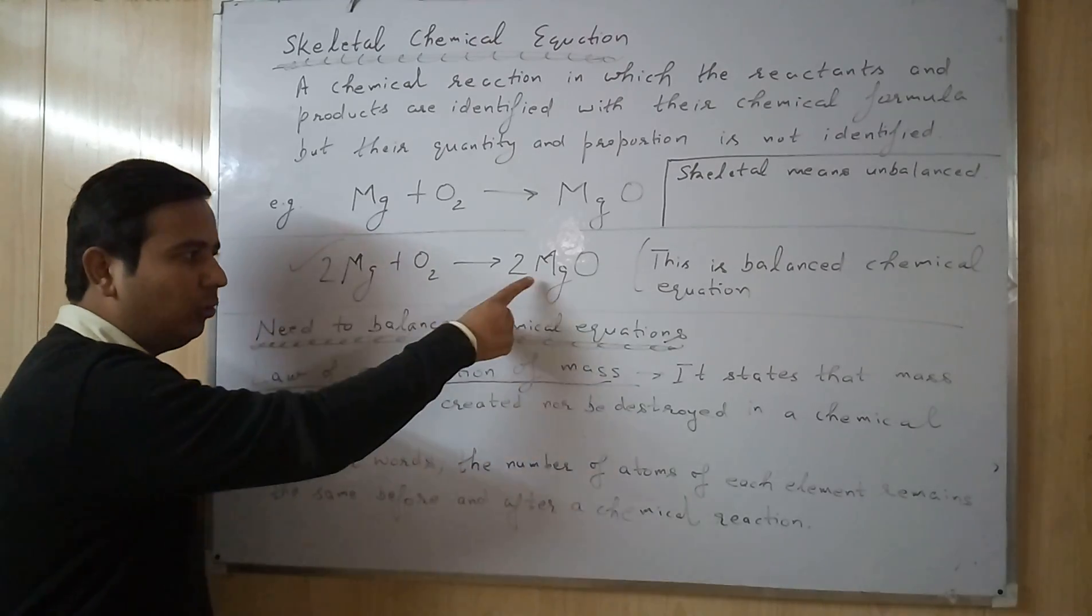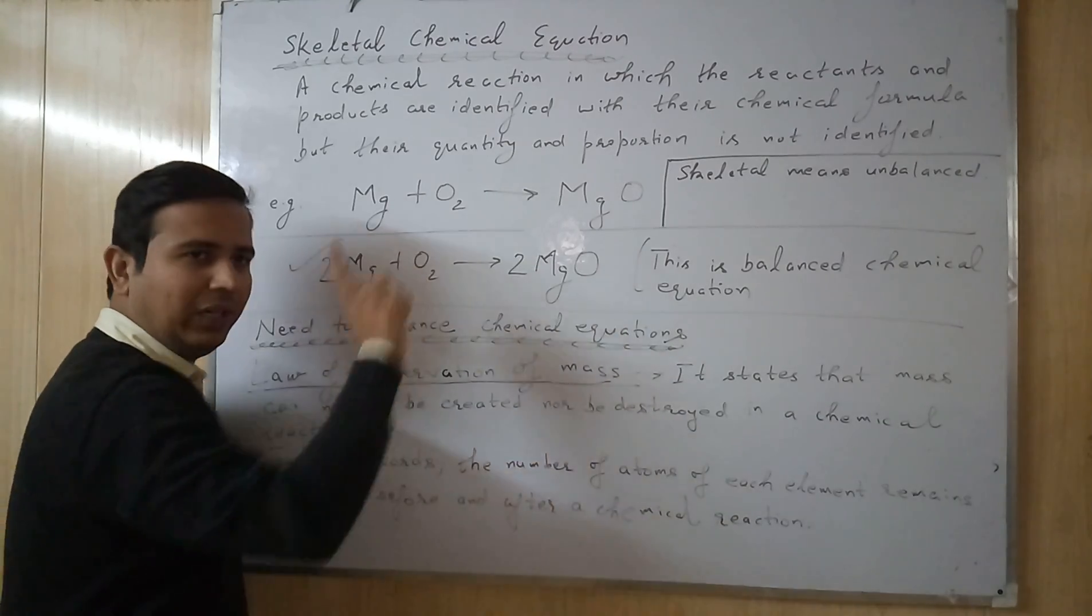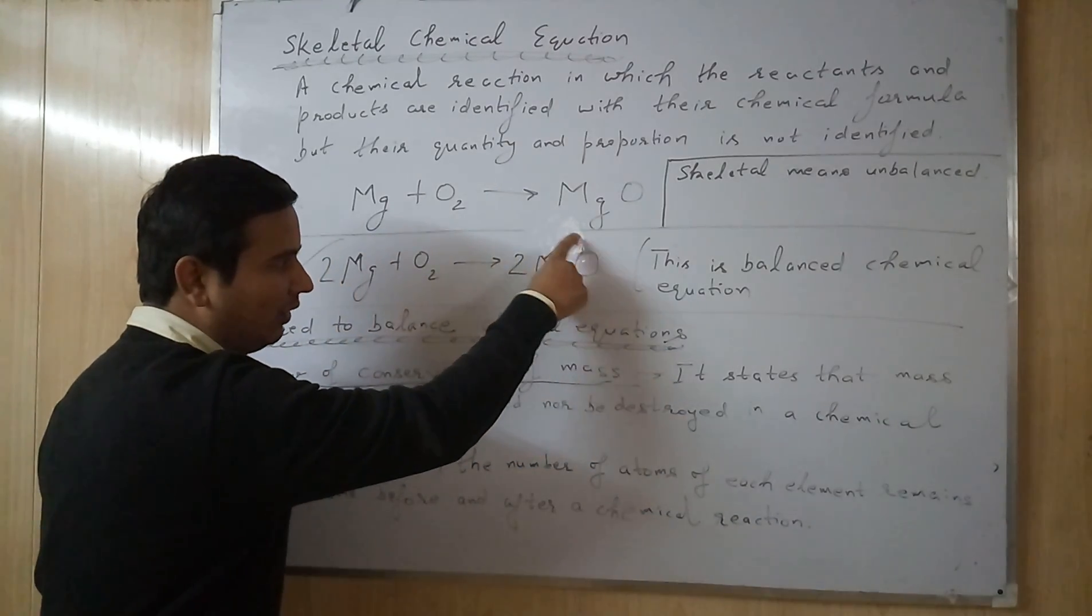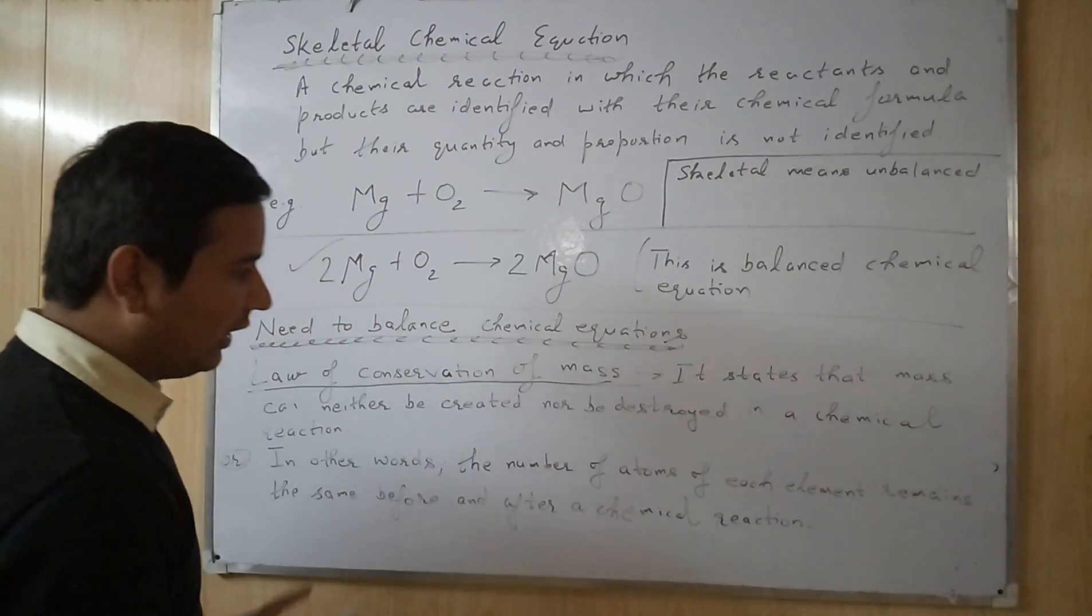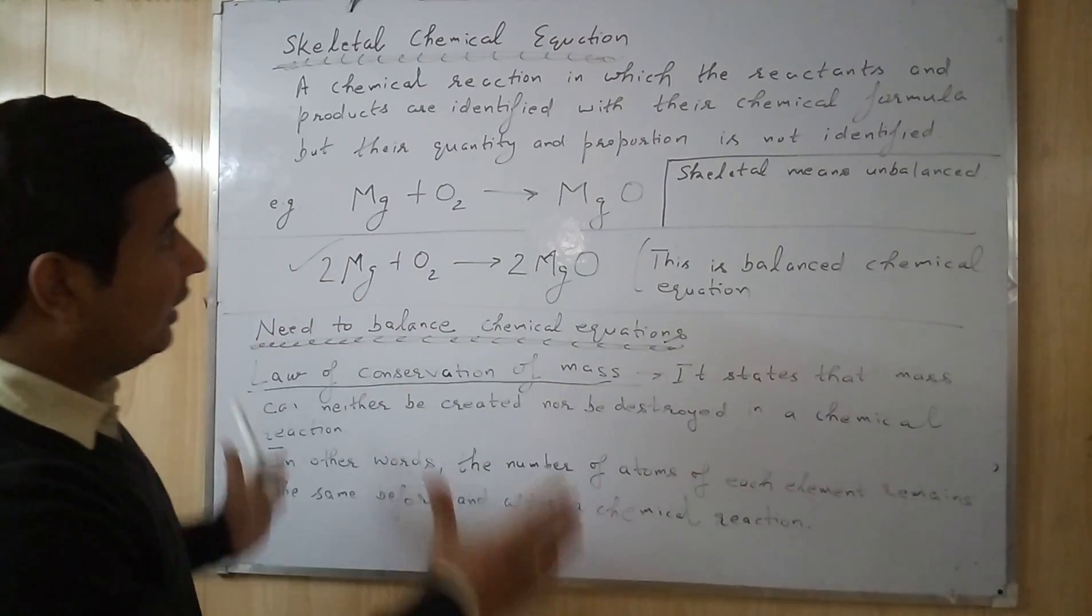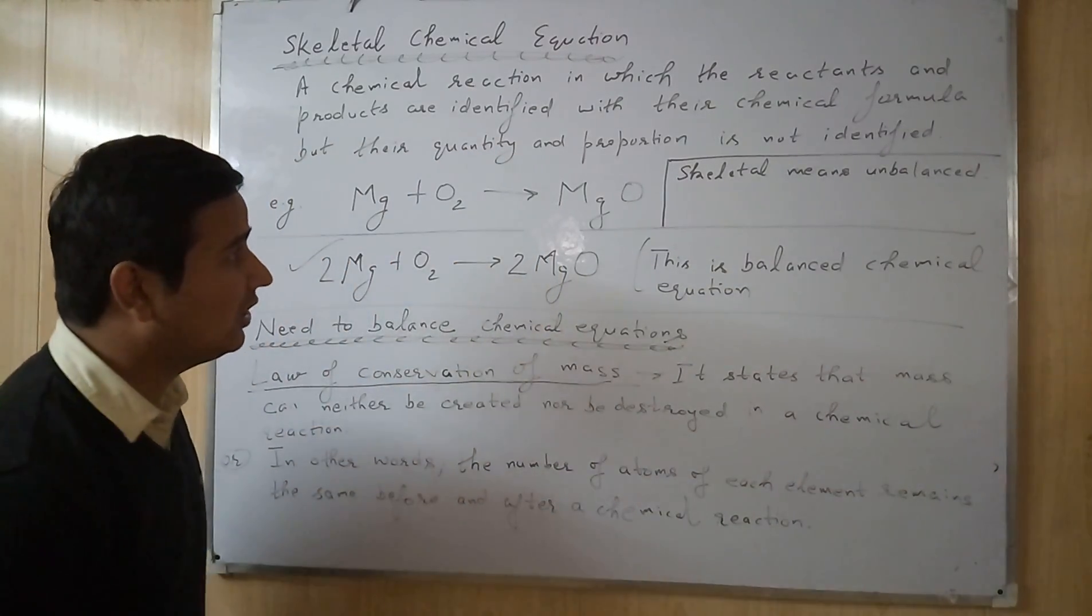Because see the balance. See the balance. 2 atoms of Magnesium, 2 atoms of Magnesium. This is reactant side and this is product side. 2 atoms of Oxygen, 2 atoms of Oxygen. Because this 2 will belong to this. I will clear more about this when I will dictate the topic of how to balance a chemical equation. So I think enough for this section.